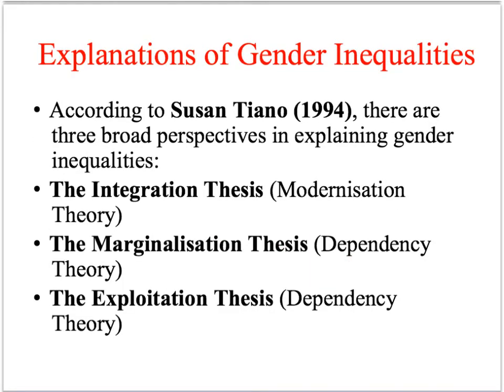We're going to look at three types of explanations. Firstly, we're going to look at what's been called the integration thesis, which we can relate to the modernisation theory perspective. And then we're going to look at two other types of explanations that are much more closely related to the themes of dependency theory: the marginalisation thesis and the exploitation thesis.